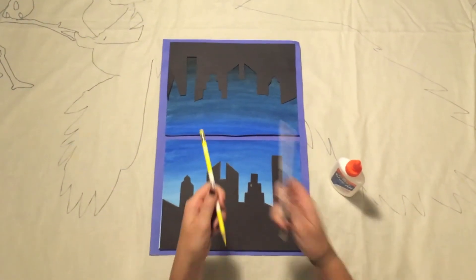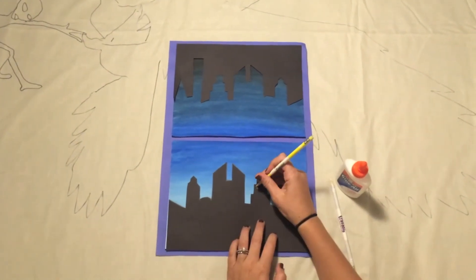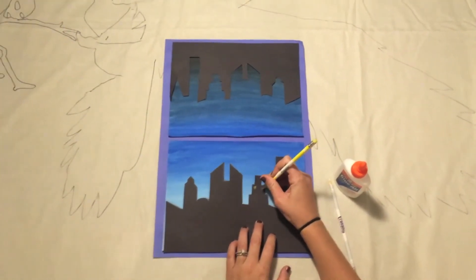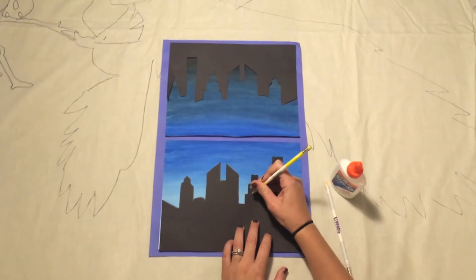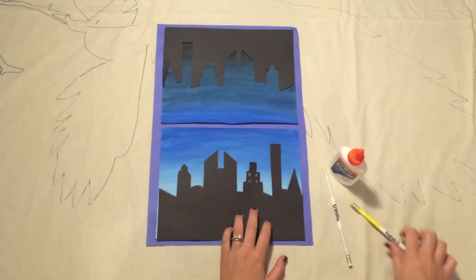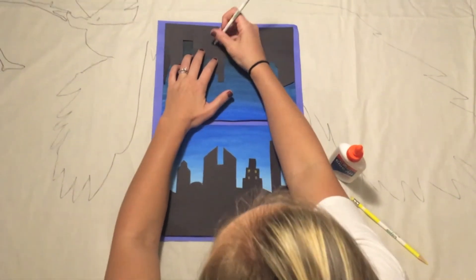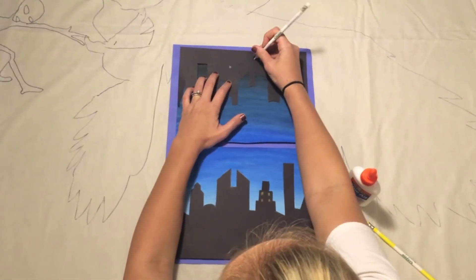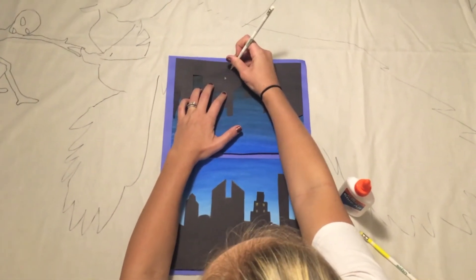you can use chalk pastels or colored pencils to add details to your cities and to your night sky. You can add as much or as little details as you would like.